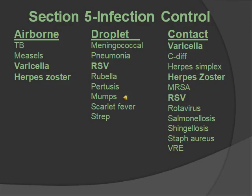Diseases by precaution type: Airborne — tuberculosis, measles, varicella, herpes zoster. Droplet — meningococcal, pneumonia, RSV, rubella, pertussis, mumps, scarlet fever, and strep. Contact — varicella, C. diff, herpes simplex, herpes zoster, MRSA, RSV, rotavirus, salmonella, shingles, Staph aureus, and VRE. Note that RSV is both droplet and contact, and varicella and herpes zoster are both airborne and contact. Remember the airborne mnemonic TMV: tuberculosis, measles, varicella — 'too many videos.'